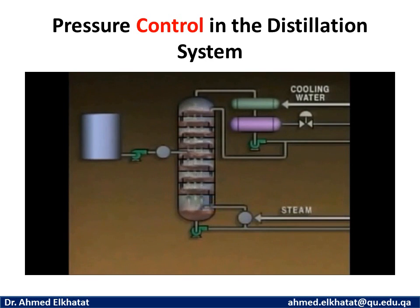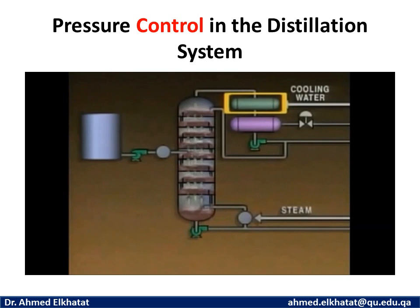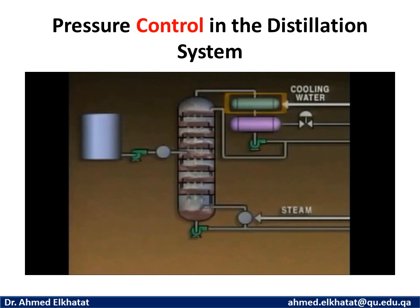Another problem that may affect the tower's differential pressure is a decrease in condenser efficiency. If the condenser's tubes are plugged or there's not enough cooling water flowing through the condenser, the condenser's pressure will increase. As a result, the flow of vapors from the tower to the condenser will decrease, and so will the vapor flow up the tower. This means that the tower top pressure will increase and the differential pressure will decrease. If a condenser problem is suspected, the condenser should be checked and corrective actions taken if necessary.